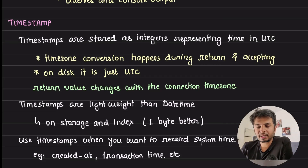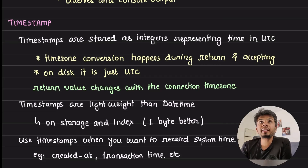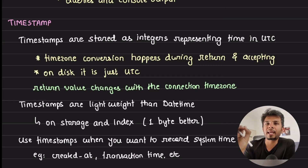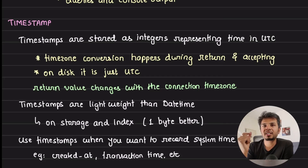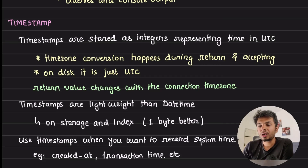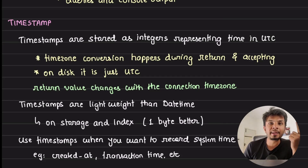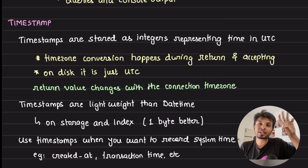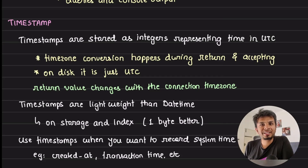Timestamp stores the number of seconds elapsed as a simple integer format, and is typically used to record system time for a particular event — for example, when a post was tweeted, a post created time, a transaction time, a metric ingestion time. When you just want to record that something happened without a lot of processing, timestamp fits very well. It's very efficient to store, process, and read, requiring no extra in-memory objects.